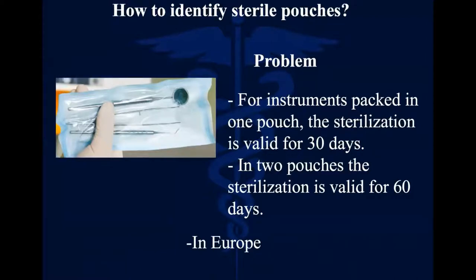Then you have the sterilization pouches. Please do not write the date of sterilization on the paper, because if you do, the paper will be worn out and will not be valid anymore. Don't write anything on the paper of the pouches — you need to put a label, but not write directly. In Europe, if used correctly, a sterilization packed in one pouch is valid for 30 days, and with two pouches, 60 days. We don't have information from the Ministry of Health right now, but we hope to have guidance about what is valid in the UAE very soon.